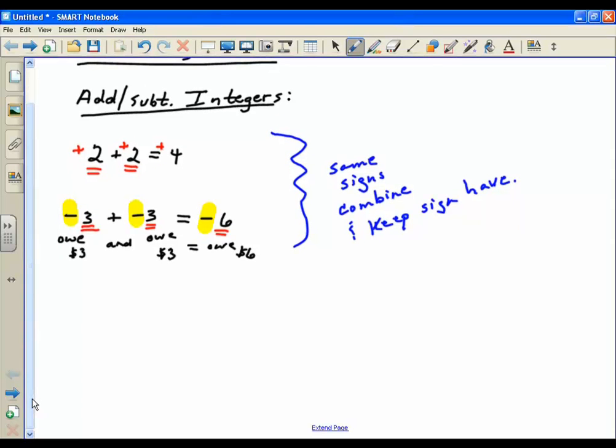So what about when they're different? Well, something that you may have seen before. 4 minus 2. Oh yes, so this is probably not too bad. Hopefully you know this is a 2. We can write this as positive and negative stuff too, can't we?